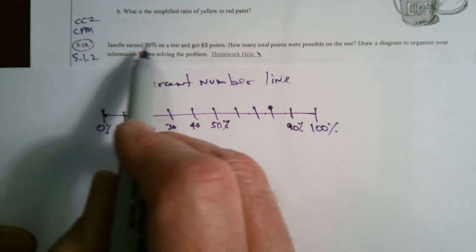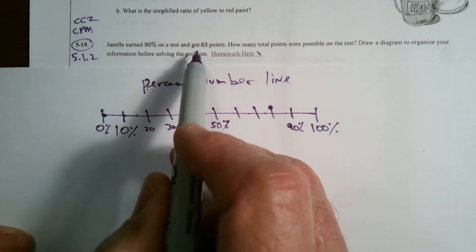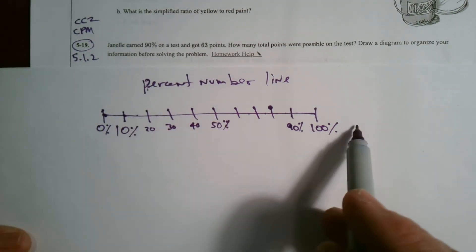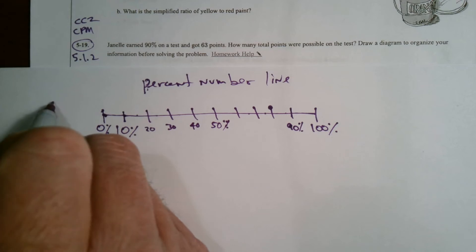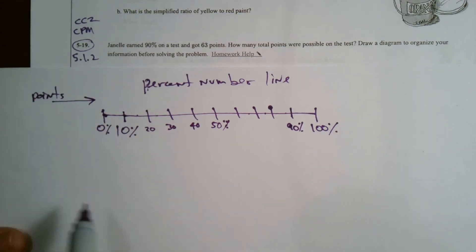Now, the other thing it gave me information was that Janelle earned 90% and it was 63 points. So down here on a percent number line, the bottom is always your percent. The top part in this case is going to be my points. That's what I'm utilizing. That's my other unit that I'm trying to figure out some missing values on. So my points.